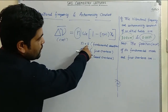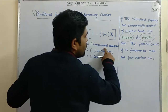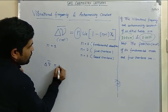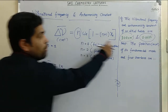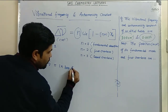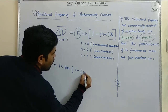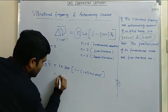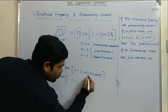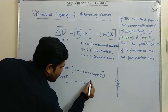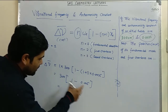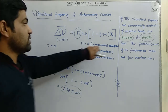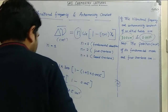For the fundamental mode, n equals 1. Putting n equals 1: delta nu = 1 × omega_e × [1 − (1+1) × x_e] = 300 × [1 − 2 × 0.0025] = 300 × [1 − 0.005] = 298.5 cm⁻¹. So the fundamental absorption is 298.5 cm⁻¹.